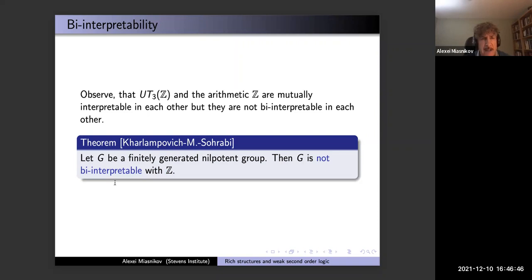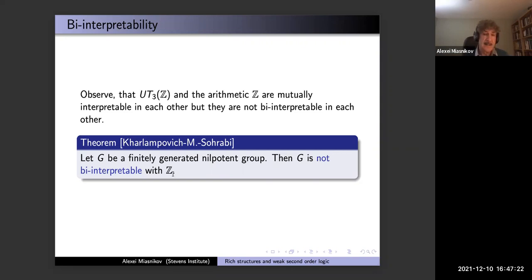The first result is that for any finitely generated nilpotent group G, one can show Z is interpretable (arithmetic is interpretable) in G — that's why equations are undecidable. But G has a decidable word problem and is interpretable in Z by Σ_1 formulas. However, there is no definable isomorphism as required — so taking the Heisenberg group, you interpret Z in it and interpret back the Heisenberg group, but the two copies don't 'know about each other' — they are not bi-interpretable.